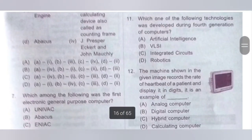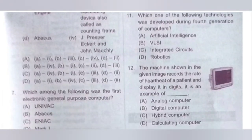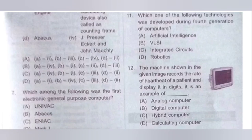11th question: Which technology was developed during the 4th generation of computers? We know 4th generation uses processors. Options: A. Artificial intelligence; B. VLSI; C. Integrated circuit; D. Robotics. VLSI means Very Large Scale Integration — a process of creating an integrated circuit by combining thousands of transistors into a single chip. Option B is the correct answer.